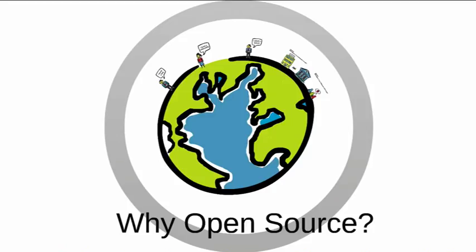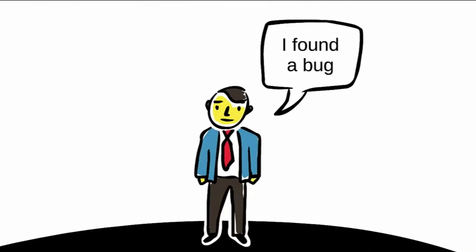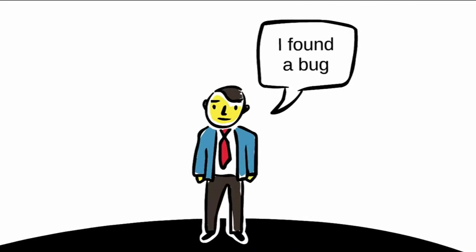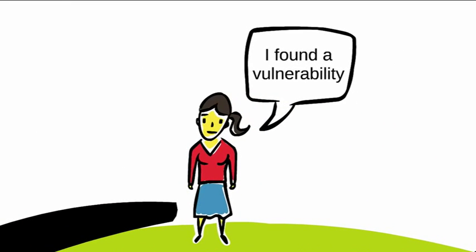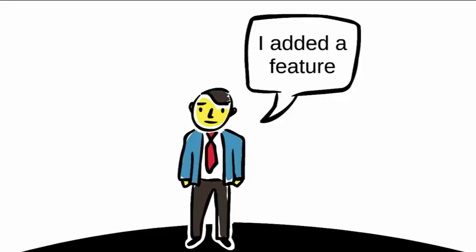Why open source? I realize this is kind of a dumb question to ask at an open source conference, but there are some pretty important reasons why we chose Cryptomator to be an open source project — especially for a security project. The obvious advantages: anybody in the world can find a bug and report it on our GitHub repository; security weaknesses are especially important to us. If someone wants to add features, they can fork the project and add them.